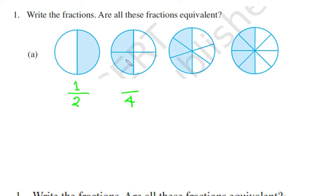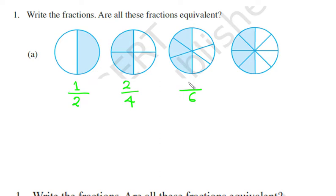How many parts are shaded? Two parts. For the third geometry, counting the parts: one, two, three, four, five, six — so denominator is six. How many parts are shaded? Three parts, so the numerator is three, giving the fraction three sixths.